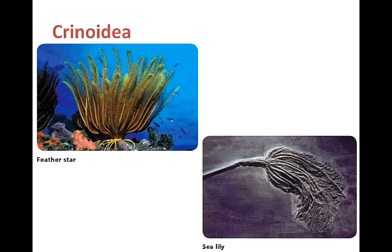Crinoidia — these are the most ancient echinoderms, abundant before the other echinoderms evolved. They are sessile for part of their life and are filter feeders, extending their arms and tube feet in the water. These feather stars and sea lilies have long arms with feather-like protrusions that make them well-suited for filter feeding.